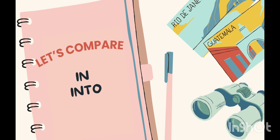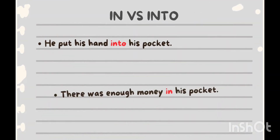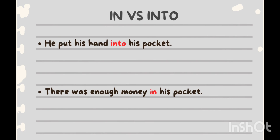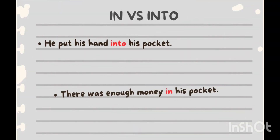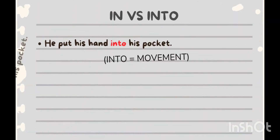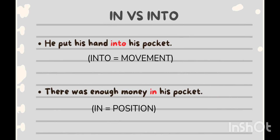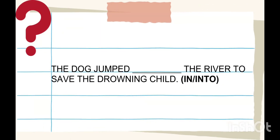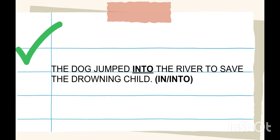Now let's compare 'in' and 'into.' Observe the sentences: 'He put his hand into his pocket.' Another one: 'There was enough money in his pocket.' Did you notice? 'In' is showing a position, whereas 'into' shows movement. So if you get a question like 'The dog jumped ___ the river to save the drowning child,' you should fill the blank with 'into.'